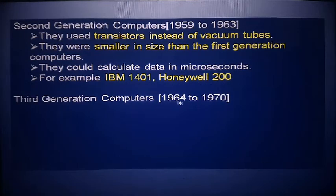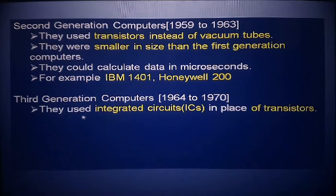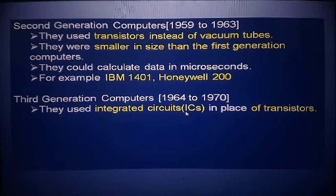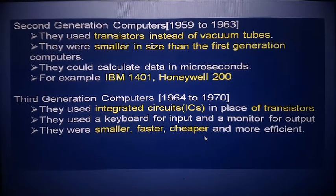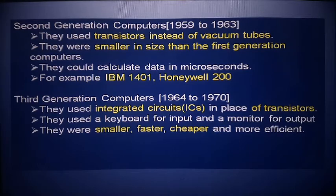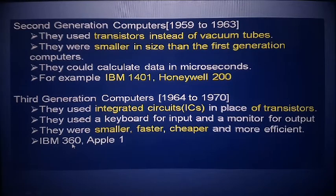The third generation of computers was from 1964 to 1970. They used Integrated Circuits (IC) in place of transistors. So: first generation used vacuum tubes, second generation used transistors, and third generation converted to ICs. They also used keyboards for input and monitors for output. They were very small, fast, cheaper, and more efficient — affordable for most people. Examples include IBM 360 and Apple I.